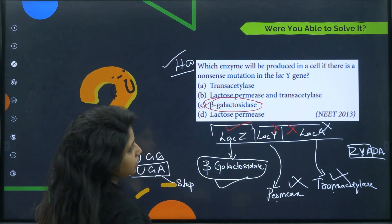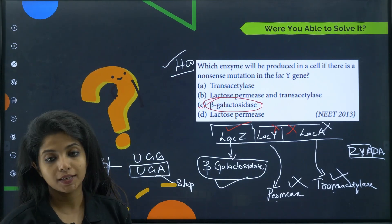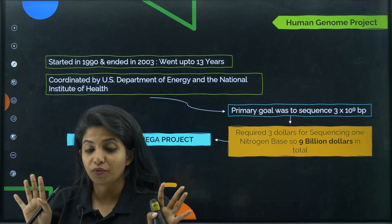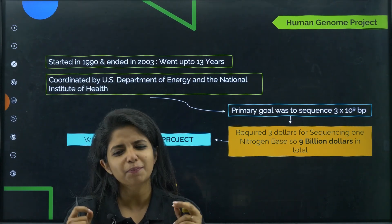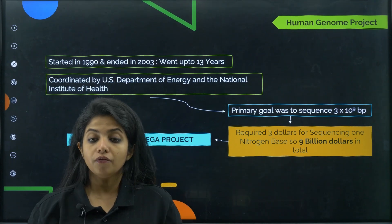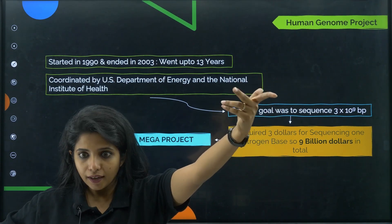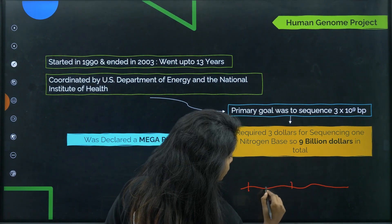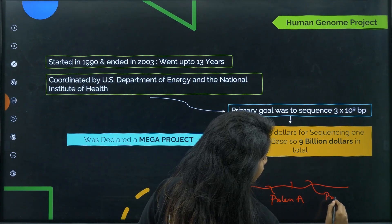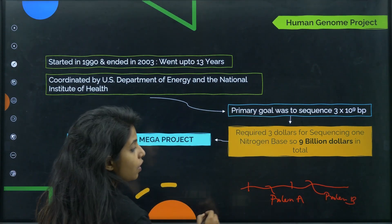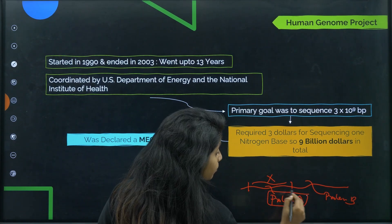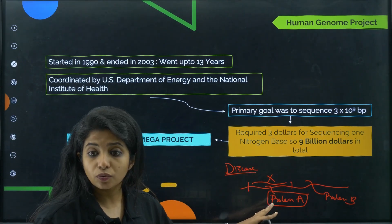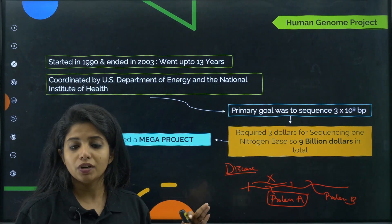So the answer is beta-galactosidase — this question came in 2013. Now, moving on to today's topic: the Human Genome Project. Someone decided we need to find out the whole sequence of the DNA. Why? Because if we can identify which sequence codes for which protein, and if a disease is caused because a protein is not being made, we can potentially find ways to cure it.